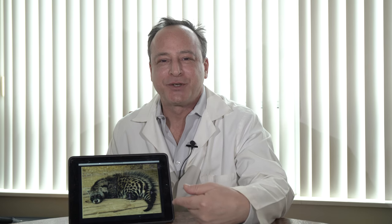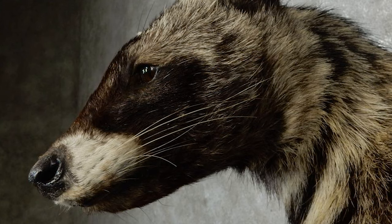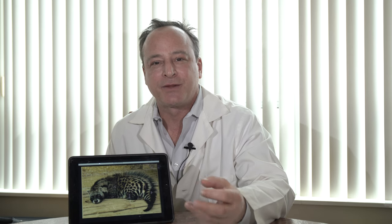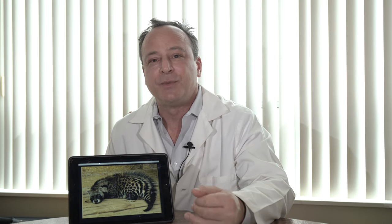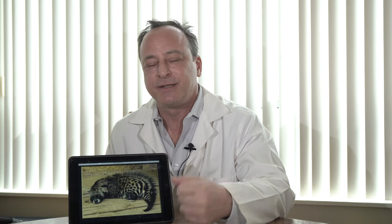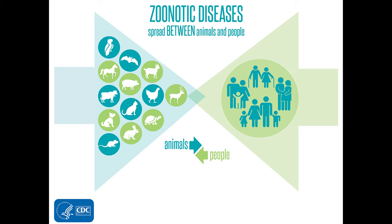So why am I showing this picture? This is a civet. This is an African species that is now known to be the intermediate host that transmitted SARS back in 2003 to humans. So it starts with a bat, goes to the intermediate host, which is this in this case, and then to humans.